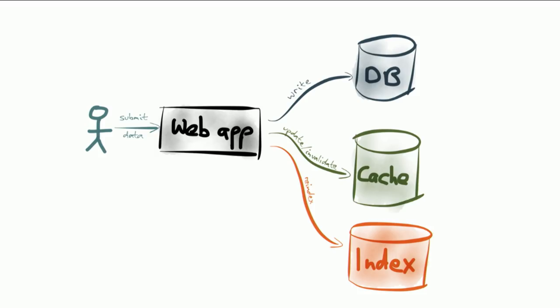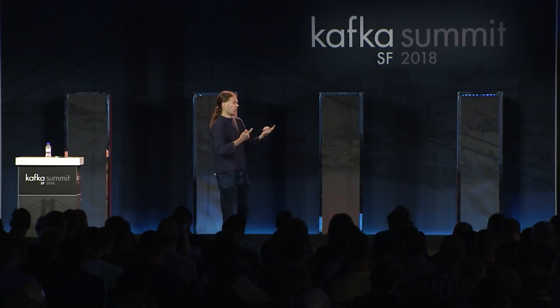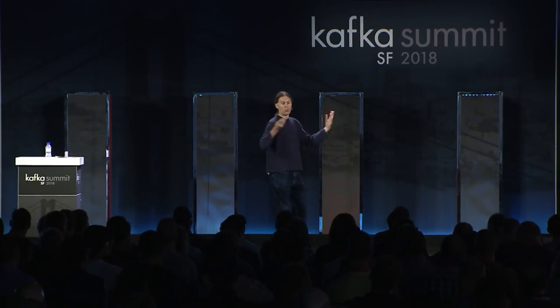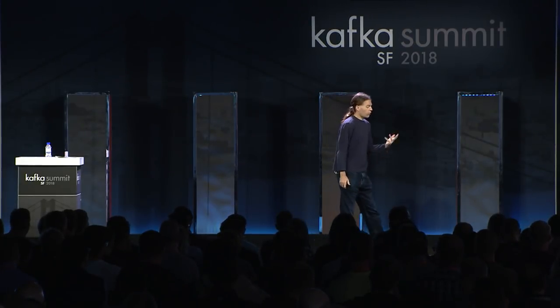Let's look at an example where you might want atomicity — a typical web app where you've stored data in a database, but you might also have a cache for faster access and a full-text search index for keyword search. You might use Postgres as the database, Redis as the cache, and Elasticsearch as the full-text index. What happens if the user wants to change some data, and different copies of that data live in these three different systems?